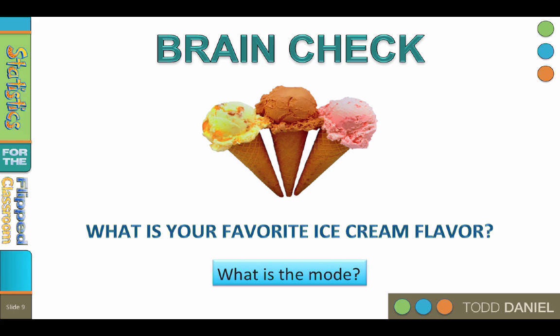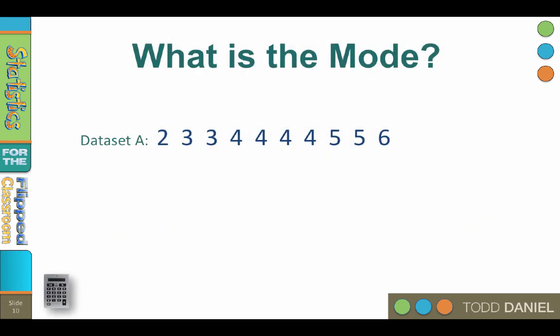To calculate the mode, it is very useful — although not absolutely necessary — to arrange the scores in ascending order from lowest to highest to see which score occurs most frequently. Look at the values in data set A and see if you can figure out the mode. There are more fours than any other number, so the mode is four. It is the most frequently occurring score.